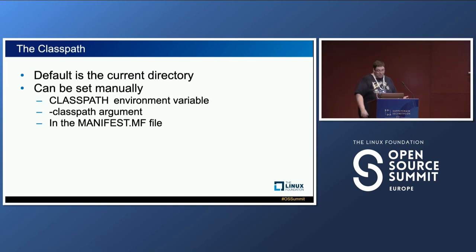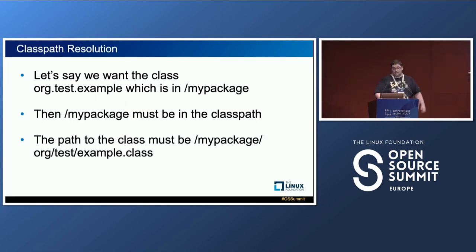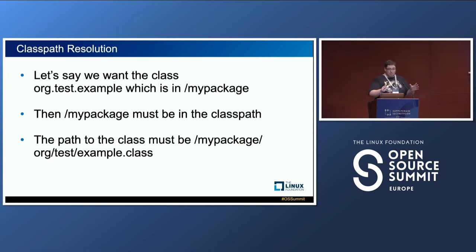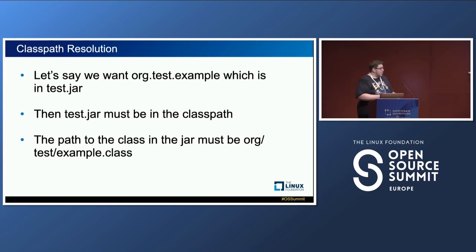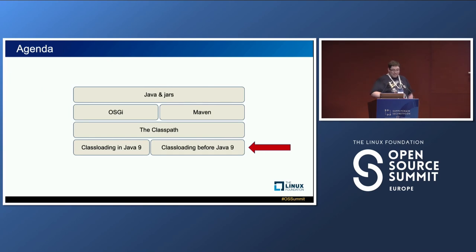What happens to the things that are on the classpath — how does it get resolved? If we have the class org.test.example located in mypackage, then the top-level package directory must be in the classpath and the class file must be in the org/test subdirectories. If you want to include a jar file, you put the jar file itself on the classpath, but the class inside must be in the correct internal structure within the jar file — for example org/test/example.